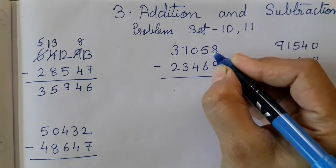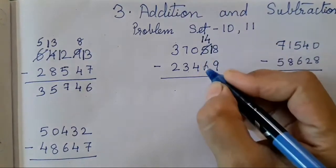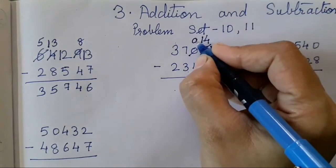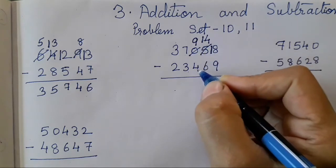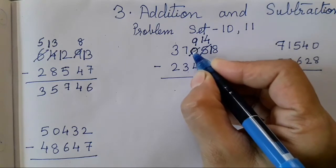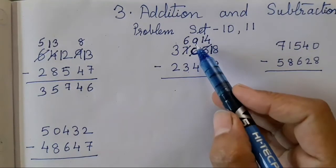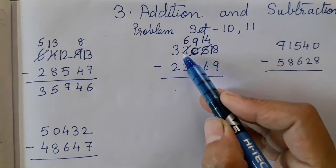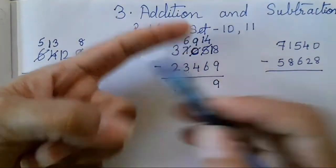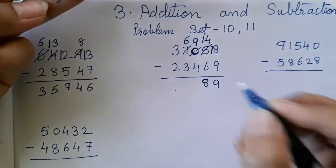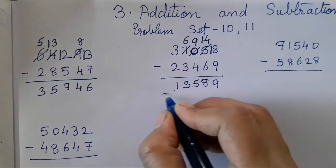Now 8 minus 9 — we cannot subtract because 8 is smaller, so this will change to 18. 1 we have borrowed from 5, so this will become 4. 4 and 6 again cannot be subtracted, so this will become 14. 1 we have borrowed from 0, so this value is going to be 9. Remember: when there is a 0 and when we are borrowing 1 from 0, it will change to 9. Now 9 minus 4 can be done. Whenever you are taking 9 for the value of 0, you have to reduce it from the second number also. Count after 6: 7, 8, 9, 10, 11, 12, 13, 14 — so this is 8. 9 minus 4 is 5, 6 minus 3 is 3, 3 minus 2 is 1.